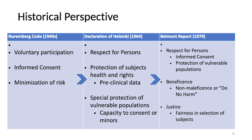In 1979, there was the Belmont Report. There are three main elements: respect of persons with informed consent and protection of vulnerable populations; beneficence, which means do no harm, as better known in the medical community; and justice, which is the fairness in selection of subjects. The Belmont Report was a result of the Tuskegee trials. I highly recommend reading about the Nuremberg trials, the thalidomide trial, and Tuskegee trials to learn more on how clinical research has evolved over time.